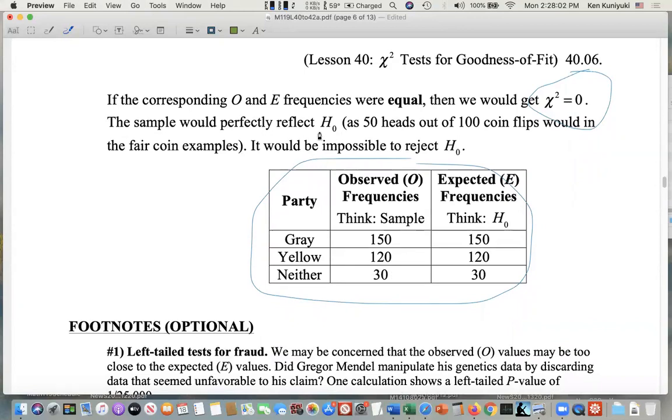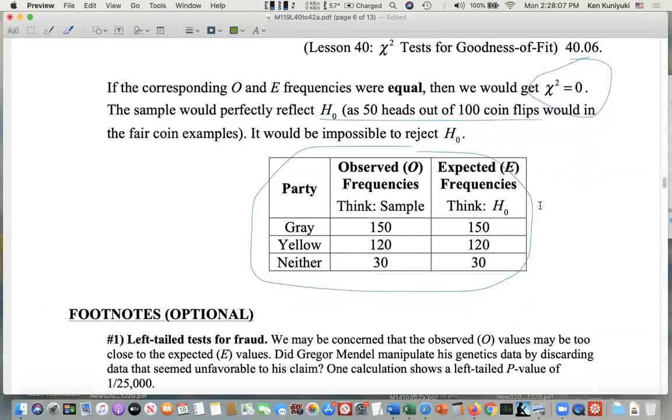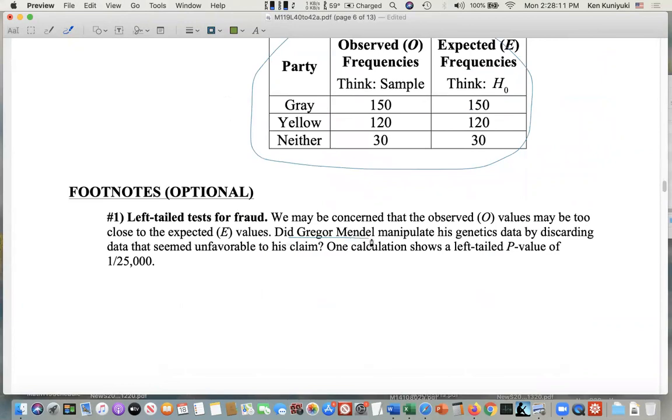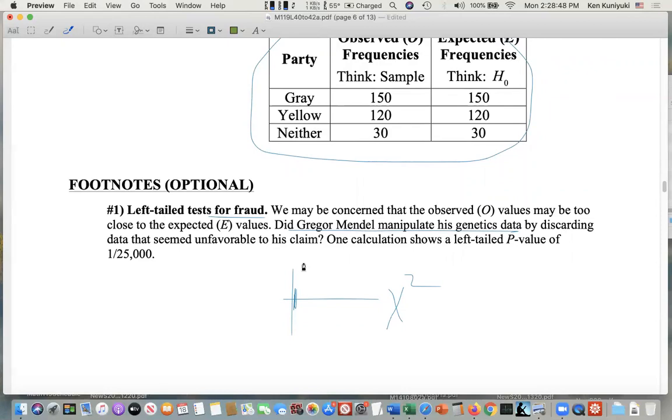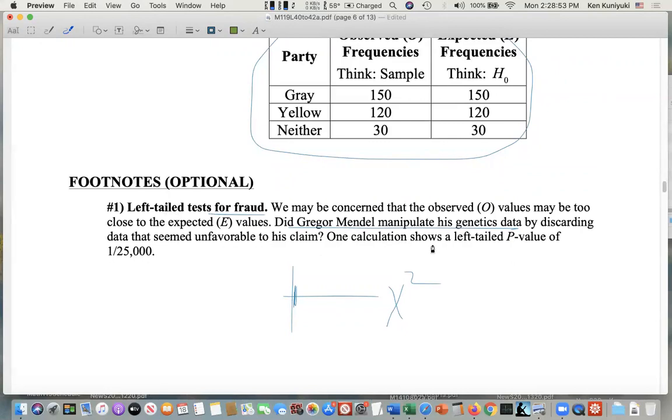Footnotes. What's the idea of a left-tail test? And Gregor Mendel has been accused of this, the father of genetics. What if the sample data fits the expected frequencies too perfectly? Your test chi-square is just too good to be true. Then a left-tail test could be a way to test for fraud. We may be concerned that the observed values may be too close to the expected values. Did Gregor Mendel manipulate his genetics data by discarding data that seemed unfavorable to his claim? Although Mendel may have thought that he had done nothing wrong, he may have not realized that he was conducting statistical malpractice when he was doing that. One calculation of one of his studies showed a left-tail p-value of one in 25,000, meaning that the probability of getting something as perfect as what Mendel got by chance relative to the null was that. His results were just too perfect.